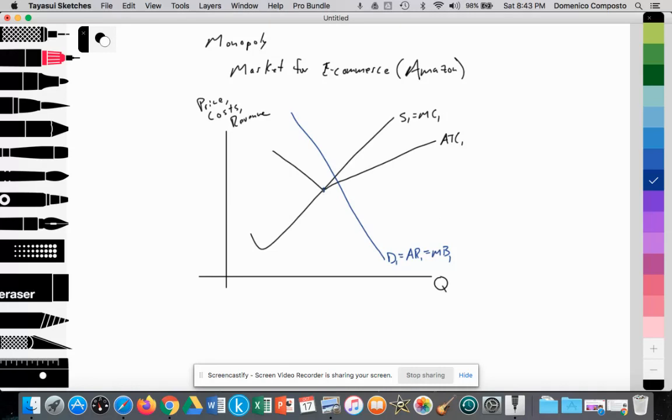As I mentioned, when I draw the demand curve, I draw it above the intersection of MC and ATC, and then I have the MR curve below it. So I'm going to have the marginal revenue curve coming below, going negative. Here we have MR1. So here we have finished drawing a monopoly.